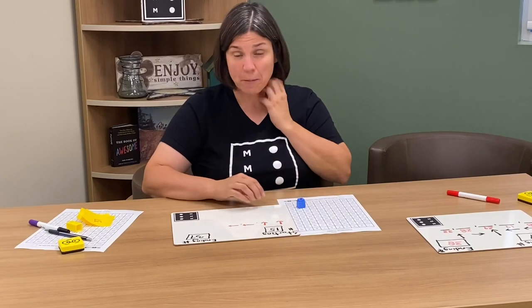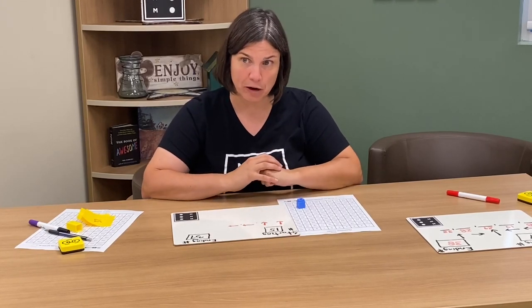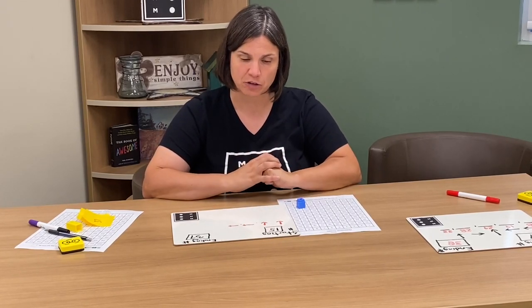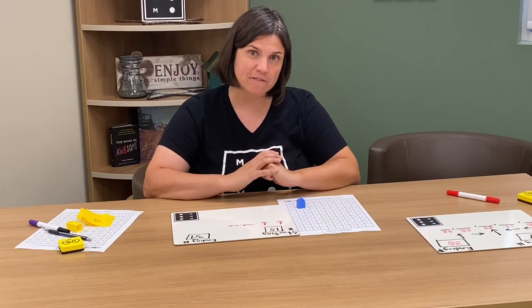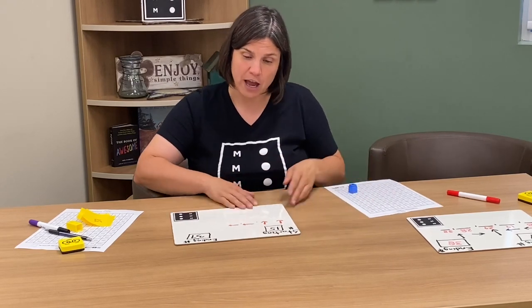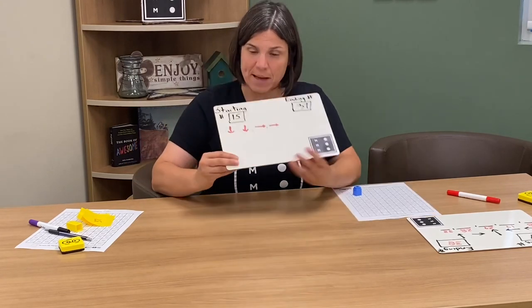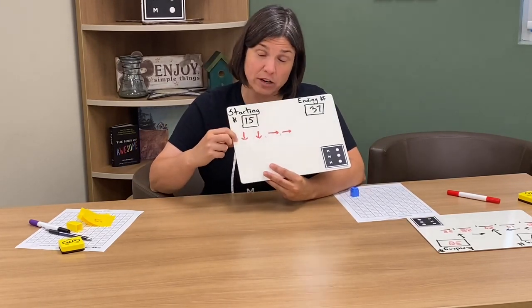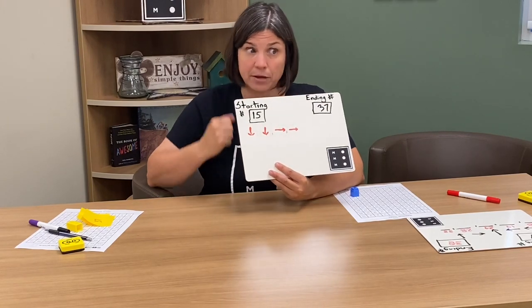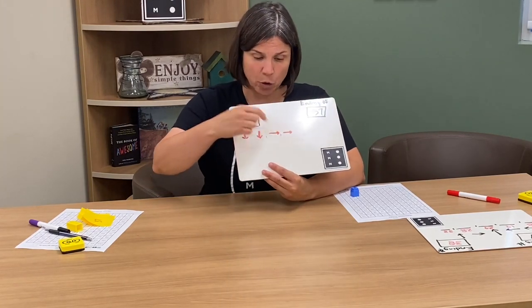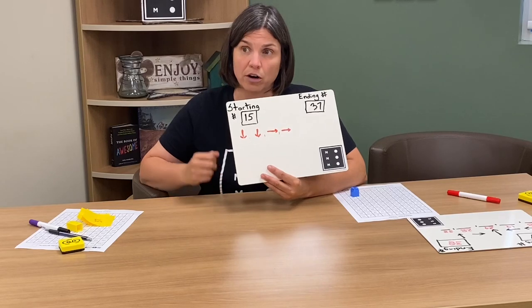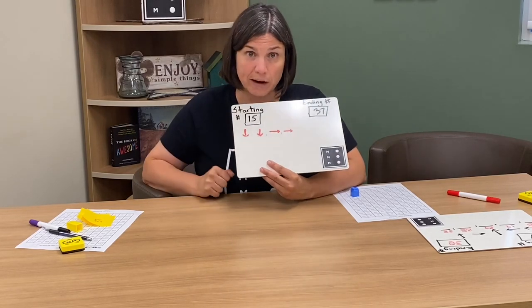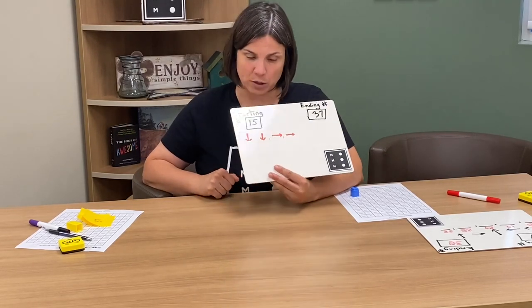All right so a couple of variations now that you've seen the game Code Breaker, how you can differentiate for the students in your classroom. One is you might find some of your students may not need to use the hundreds chart and they can just begin doing it mentally in their mind because they know that whenever you go down one space on the hundreds chart you're adding 10. If you go up you're subtracting 10. If you're going to the right you are adding one, if you're going to the left you're subtracting one.